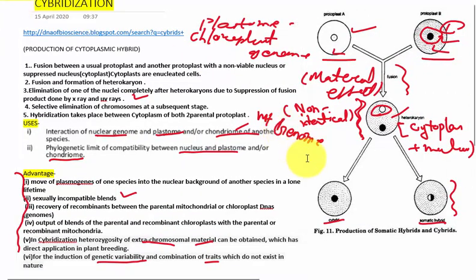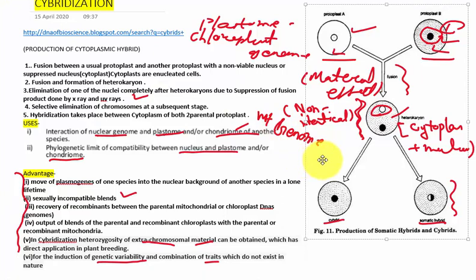Question generally comes how the cybrid forms. So you need to remember one thing. There will be the only nuclear content of one parent involved and the cytoplasm content of both the parents. So in case of hybrid, the nuclear and the cytoplasmic content of both the parents are involved in the fusion.